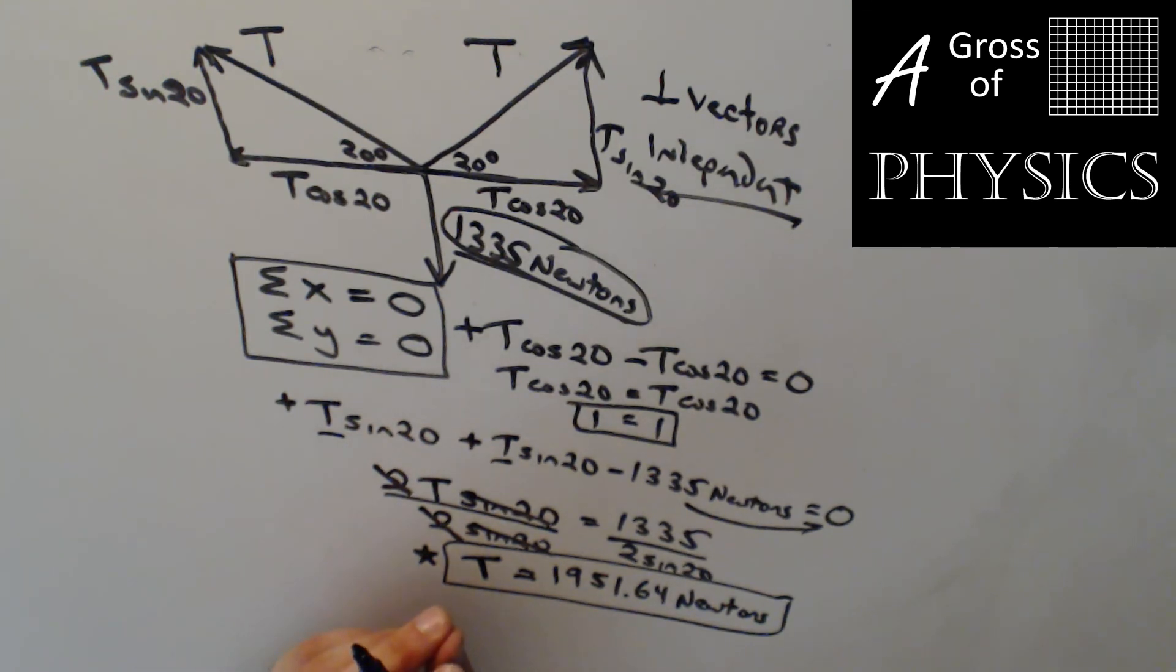That kind of information could be given in the problem. If the rope can handle 2000 newtons of force at each end does the bear break the line. In this case it would be yes. If it could only handle 1500 the answer would be no. The bear would fall to the ground.